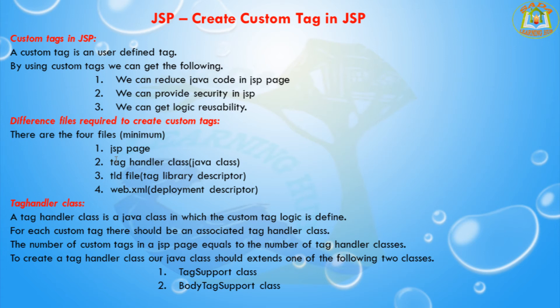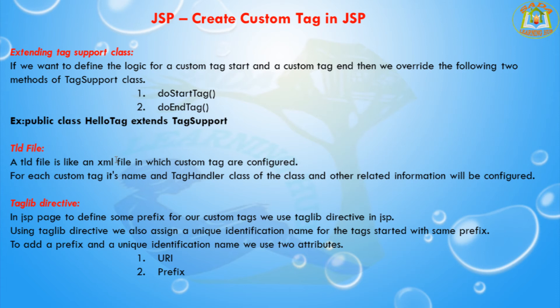The TLD file is an XML-like file in which custom tags are configured. For example, if you are creating a custom tag with any name, those names need to be configured in the TLD file. For each custom tag, its name, tag handler class, and other related information will be configured in the TLD file.